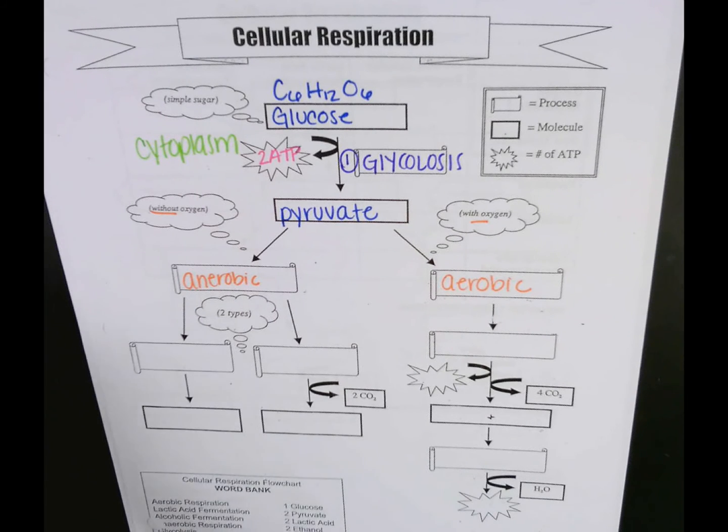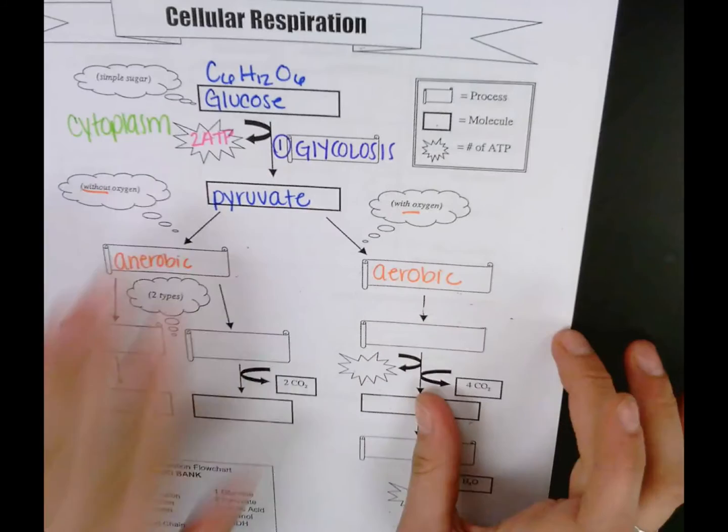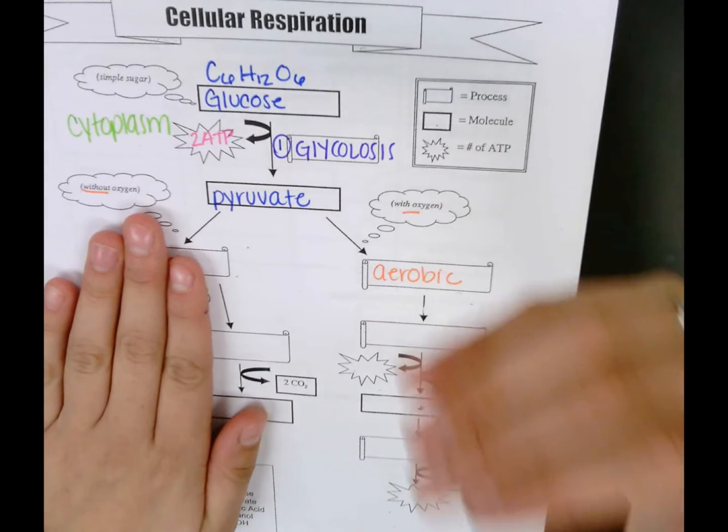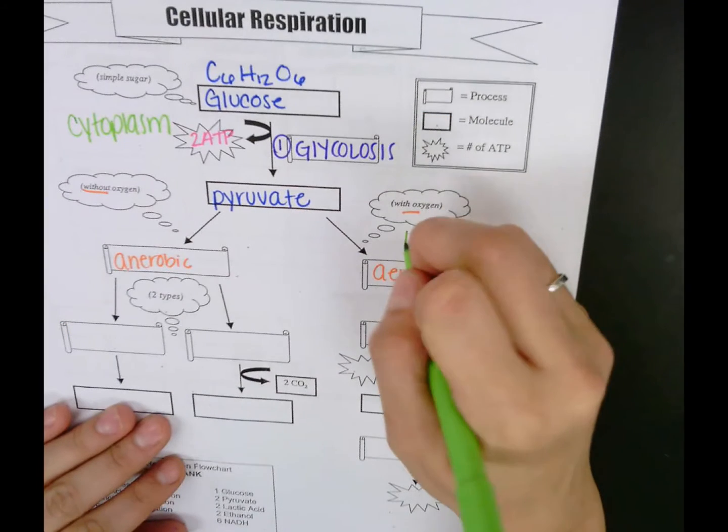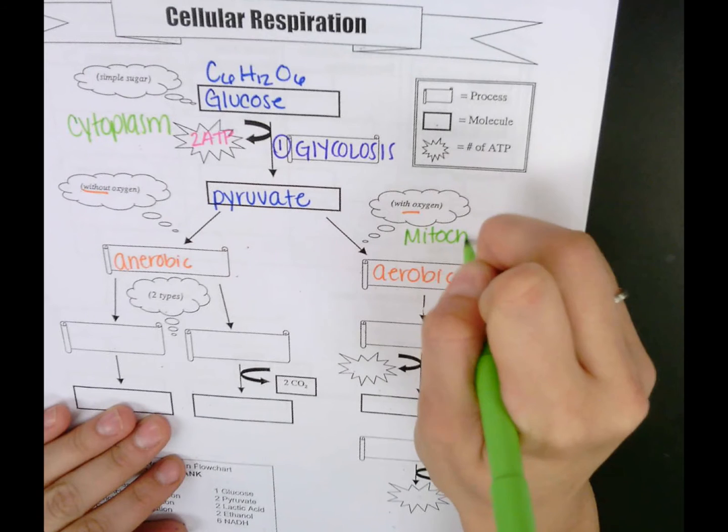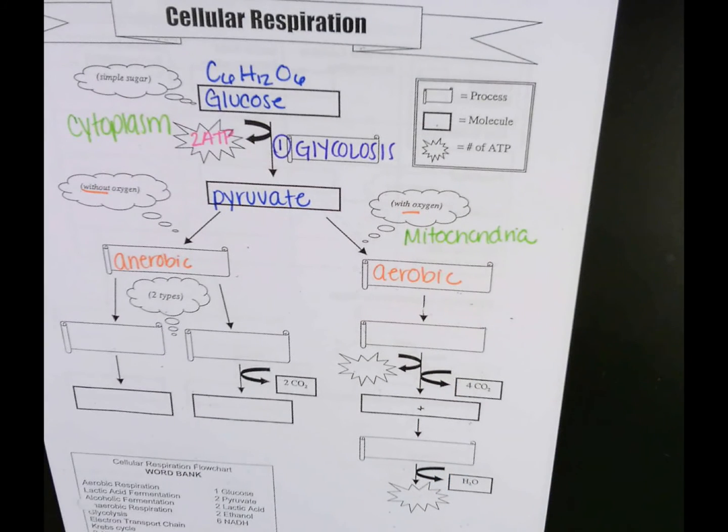So what we're going to focus on first is the aerobic route, or the highway route, and then we'll return to this side. If you have oxygen after our first step in the cytoplasm, we can move to the mitochondria. The reason why I like comparing this to a highway is because we can make so much more ATP using the highway route than using the fermentation route.